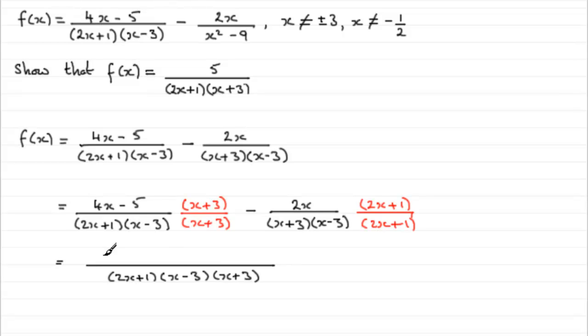So on the top here we would just have 4x minus 5 multiplied by x plus 3, minus, and then 2x multiplied by the 2x plus 1.